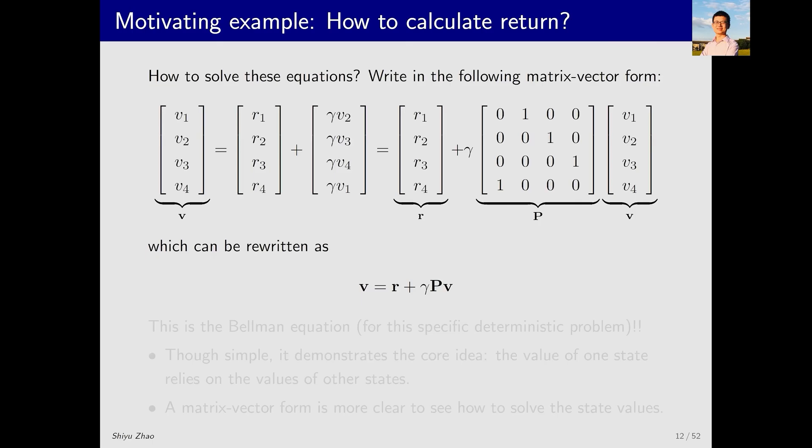First, we represent the set of equations in a matrix vector form. On the left side, we have a vector of V1, V2, V3, and V4. On the right side, we put the immediate rewards R into a vector, and the second vector becomes gamma multiplied by V2, V3, V4, and V1, noting the sequence differs from V1, V2, V3, V4. By rearranging, we can restore the vector with a matrix here. This set of equations can be simplified to a very simple form, R plus gamma P multiplied by V.